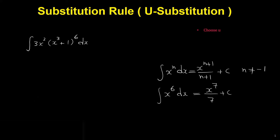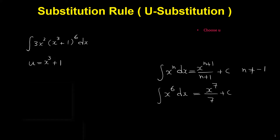When you choose u, you choose it such that the derivative of that u will be the other part of the expression. In this particular example, if we choose u to be x³ + 1, the derivative of u is 3x², which is the other part of the integral. So x³ + 1 can be u.